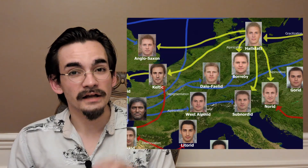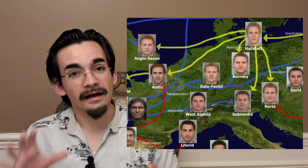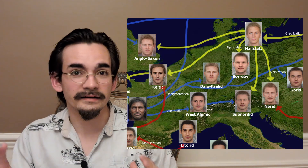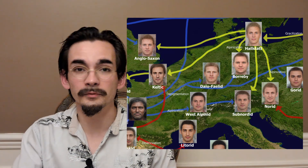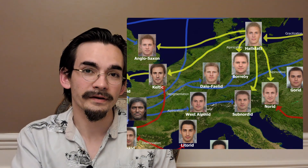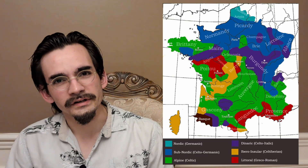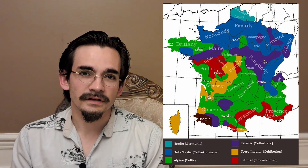Speaking of mixed types: Alpinids are very centrally concentrated in Europe, so they have contact with many different phenotypes. As a result, lots of contact types or subtypes have developed between Alpinids and other European phenotypes. The first is the sub-Nordid, which is what happens when an Alpinid mixes with a Nordid. This happens most commonly around central Germany, western Germany, eastern France — the Alsace-Lorraine and Rhineland region — where you find many sub-Nordids.